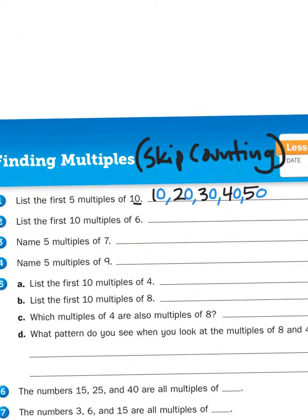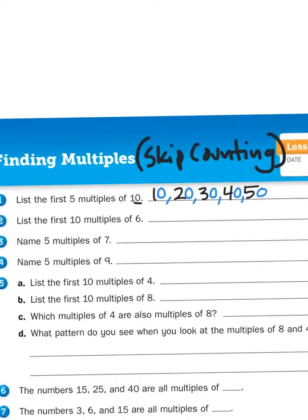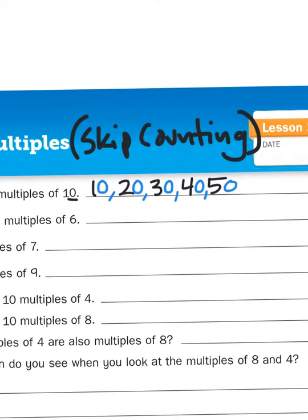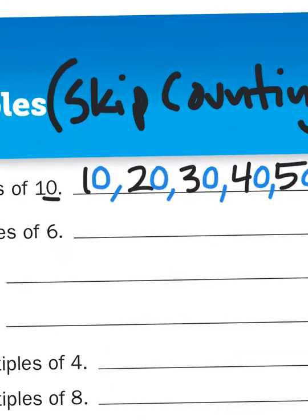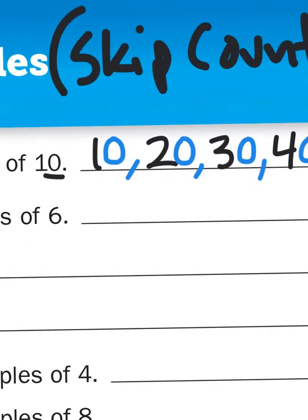So, the first 10 multiples of 6, now you may or may not know all of your 6 times tables yet, but if you can add 6 to a number, then you can find the multiples. So, let's give her a shot. So, 6, the first number in that sequence is going to be 6.